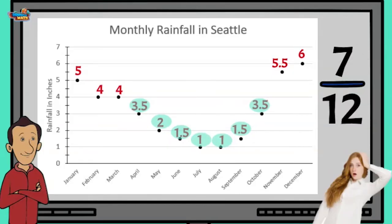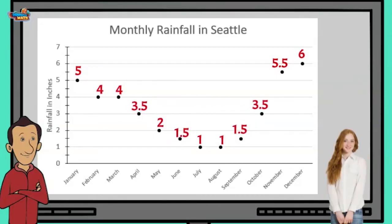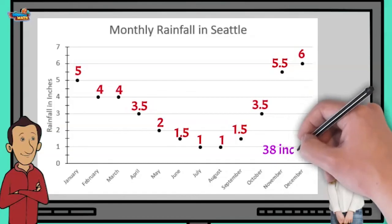If I want to find the total amount of rain for the year, do I just add all the points together? That is correct. Good thing we labeled them in our last problem. So I take the data from each month and add them together. It gives me a total of 38 inches.